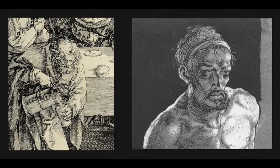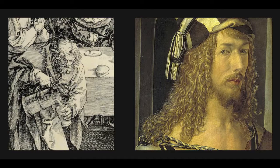If we compare the face of the innkeeper with Dürer's other self-portraits, there are notable similarities: the sharp cheekbones, the angular nose, the curly hair, and most importantly, the beard. At a time when many German men were clean-shaven, Dürer's beard was a sort of personal signature.